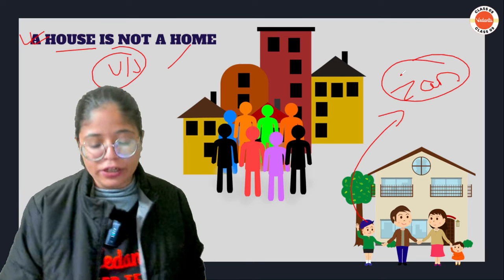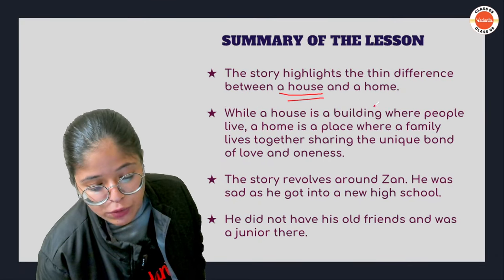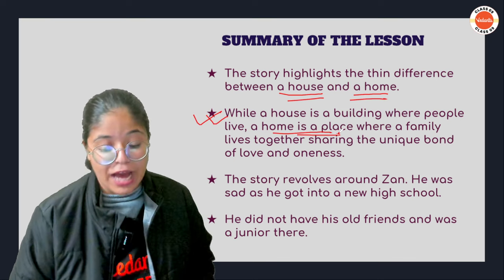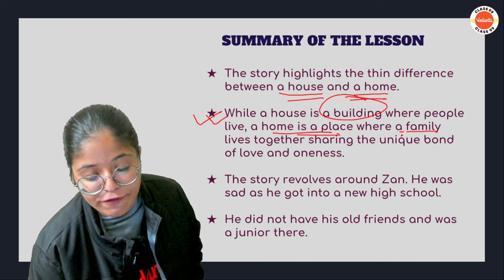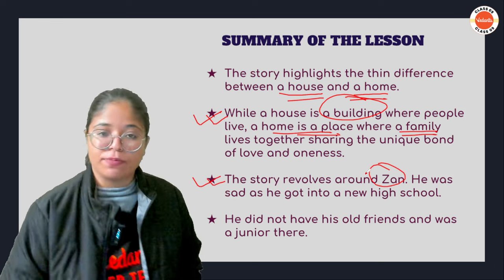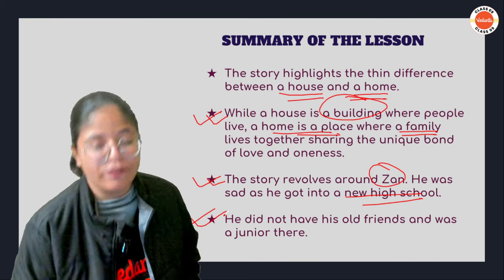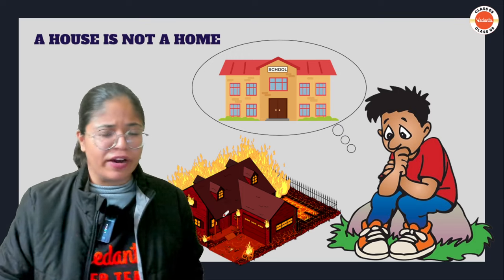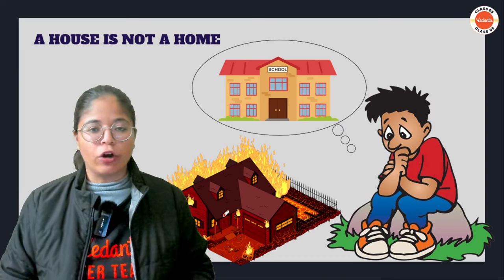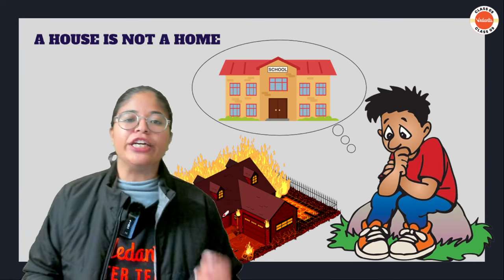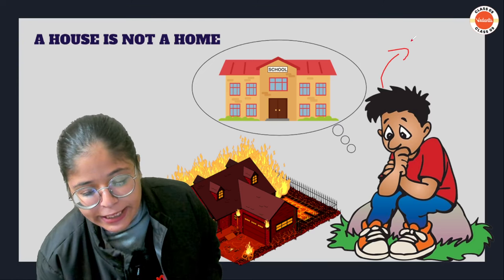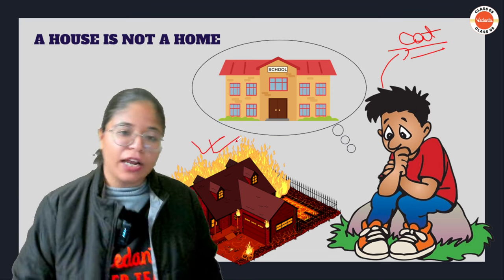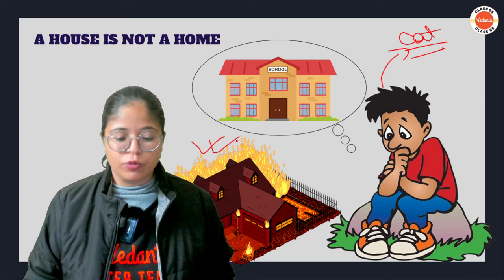The story reveals the difference between a house and a home — a house is just a building where many people live, while a home is where a family lives together with love. The story revolves around Zain, who has just gotten admission to high school and is not very happy there. One Sunday afternoon he was doing his homework, along with his cat whom he loved very much and had rescued as a child.